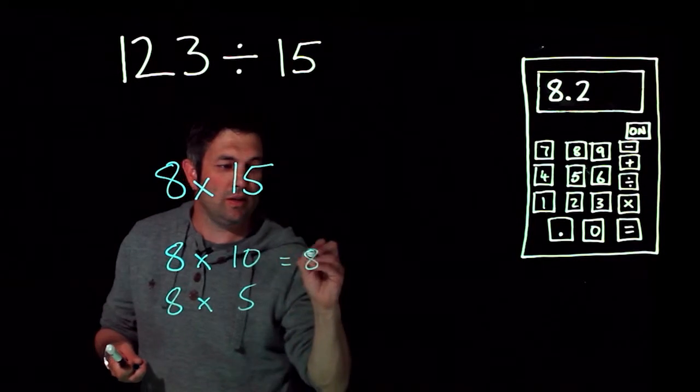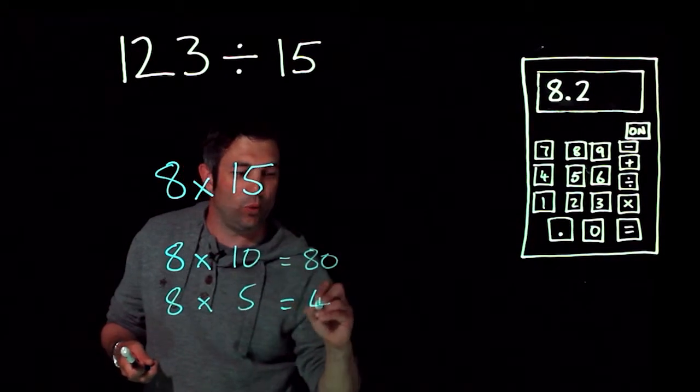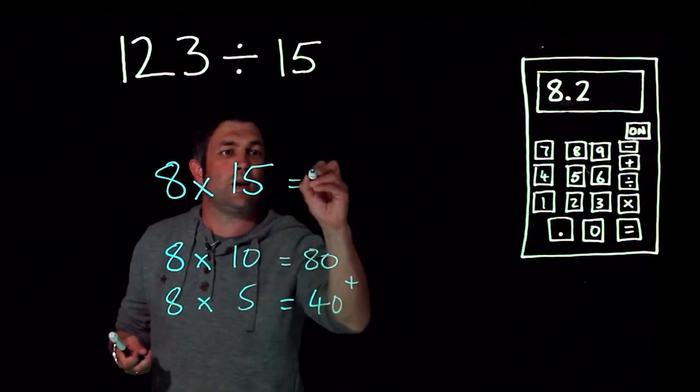8 times 10 is nice and easy - that's 80. 8 times 5 is 40. We add them up and we get 120.